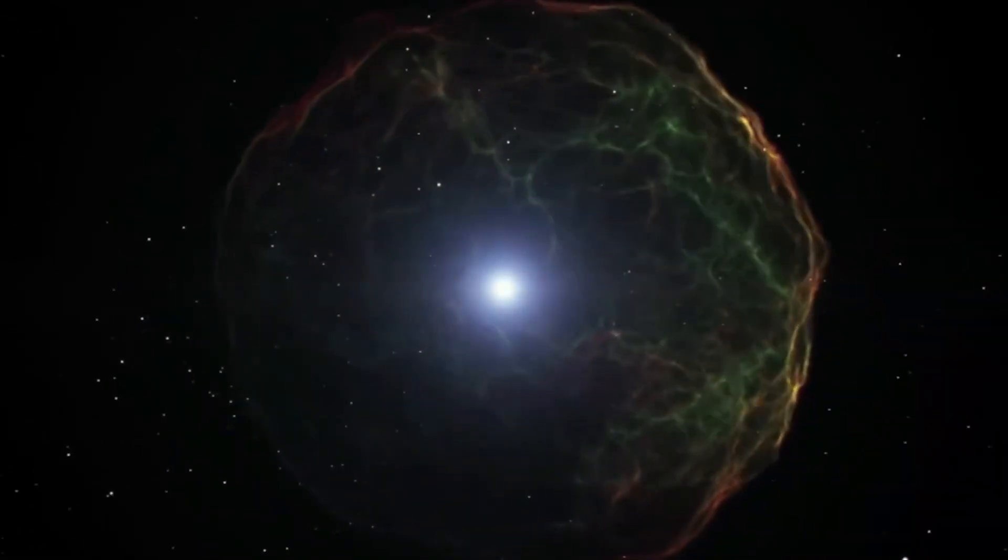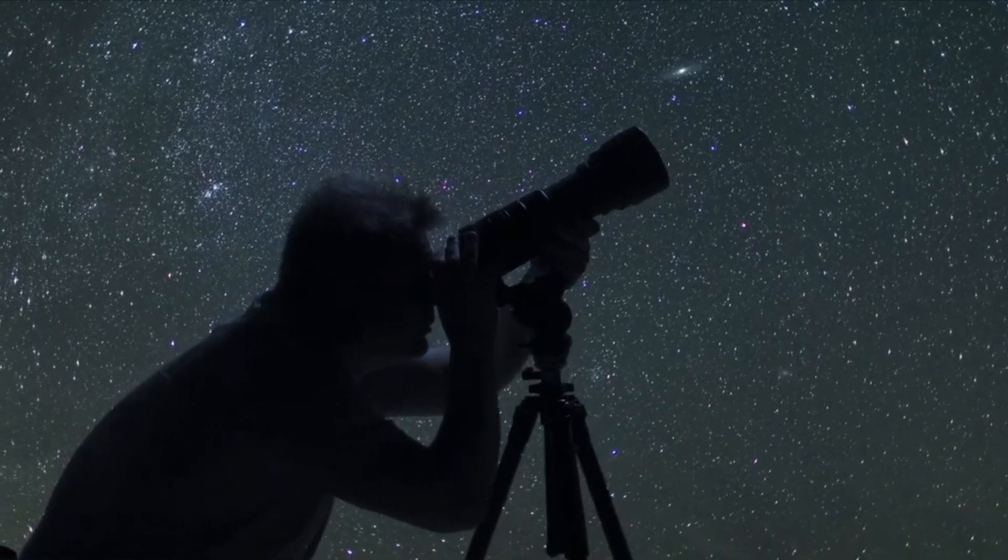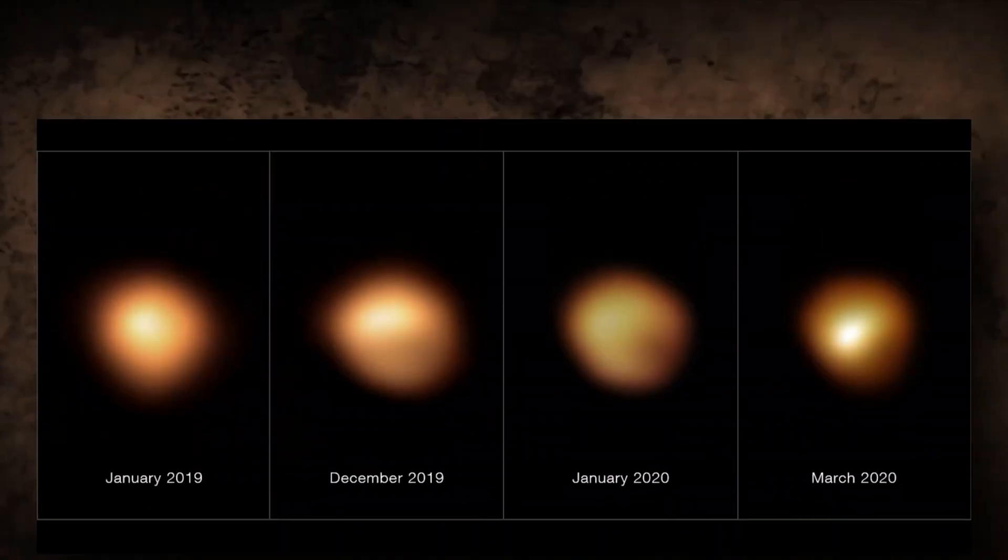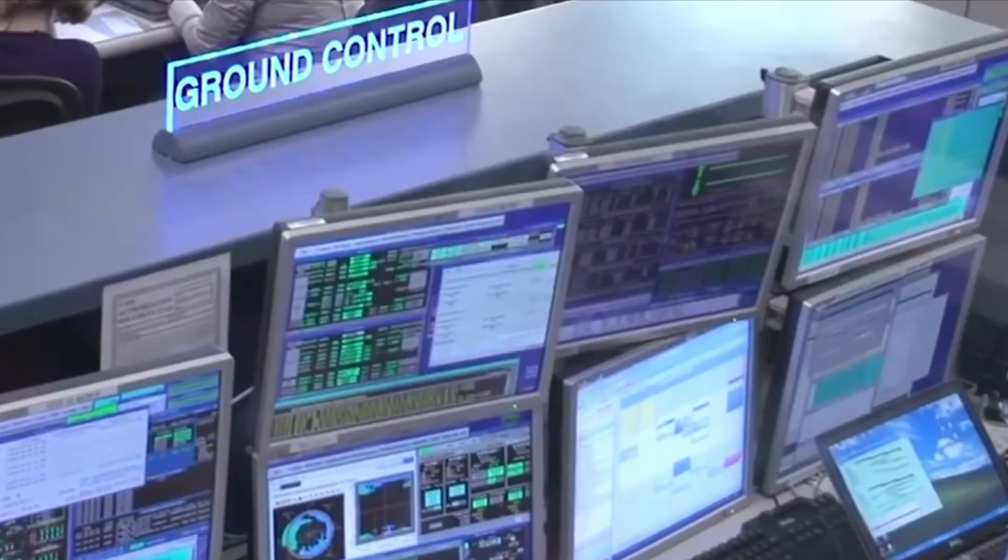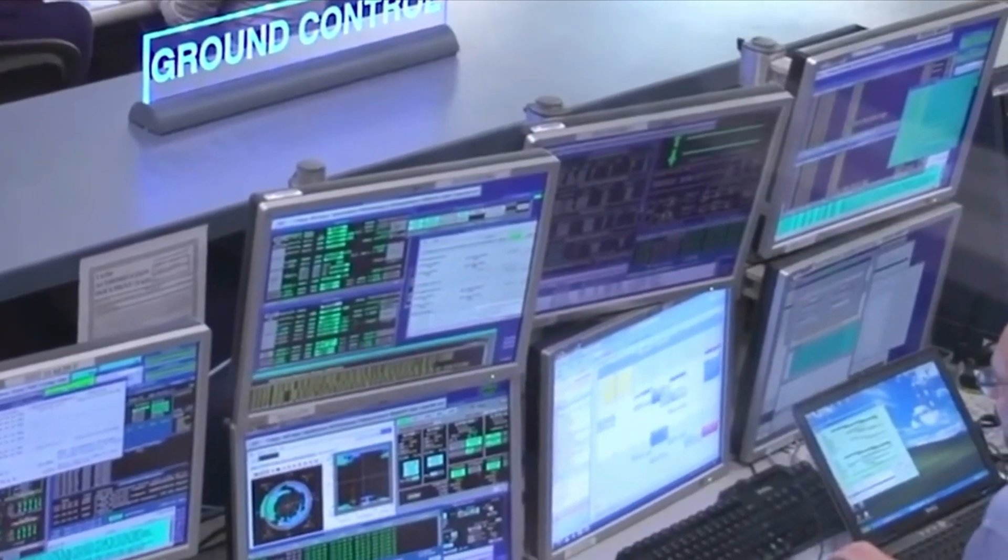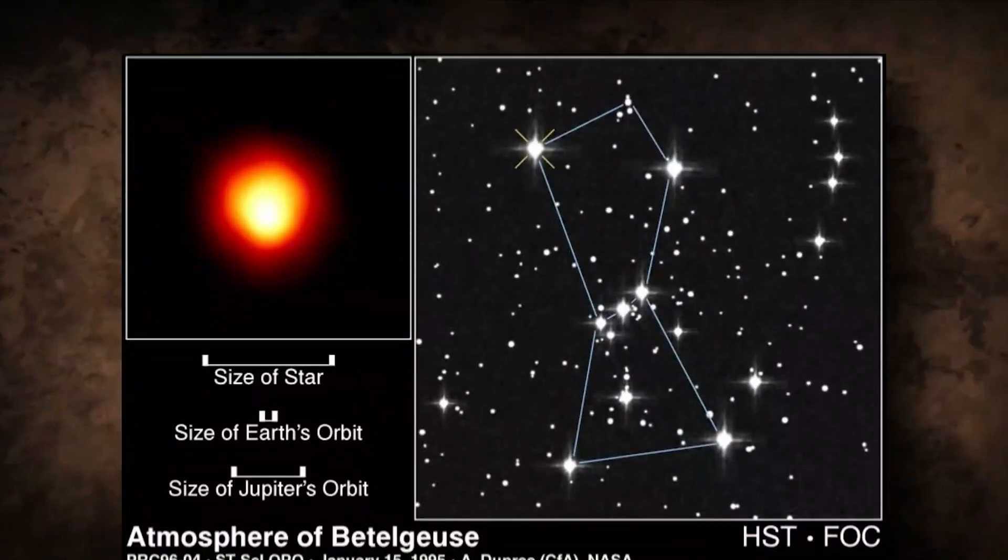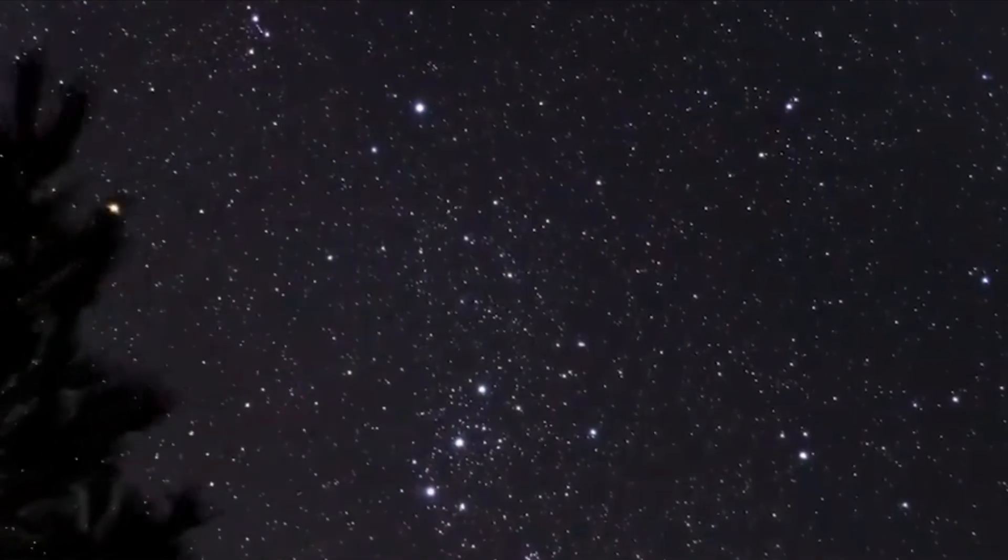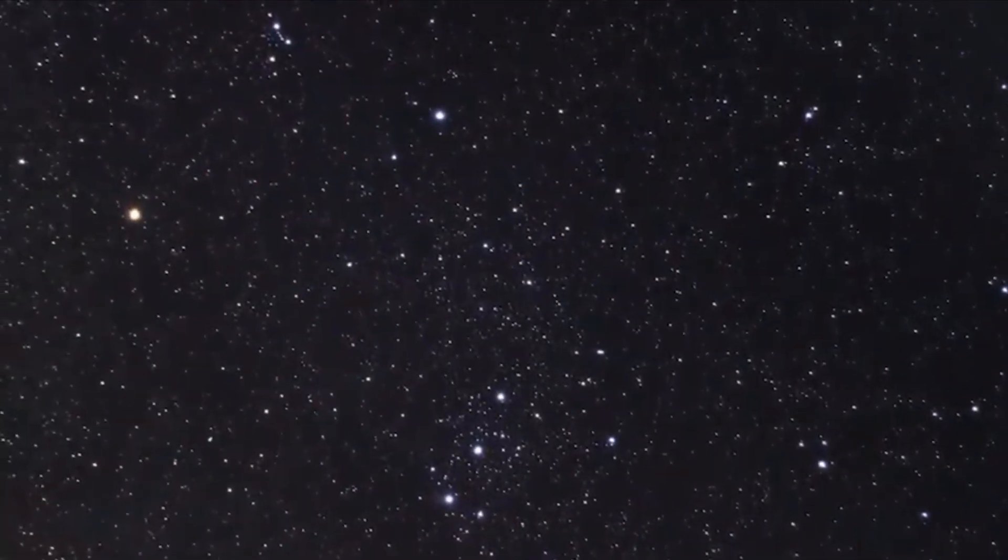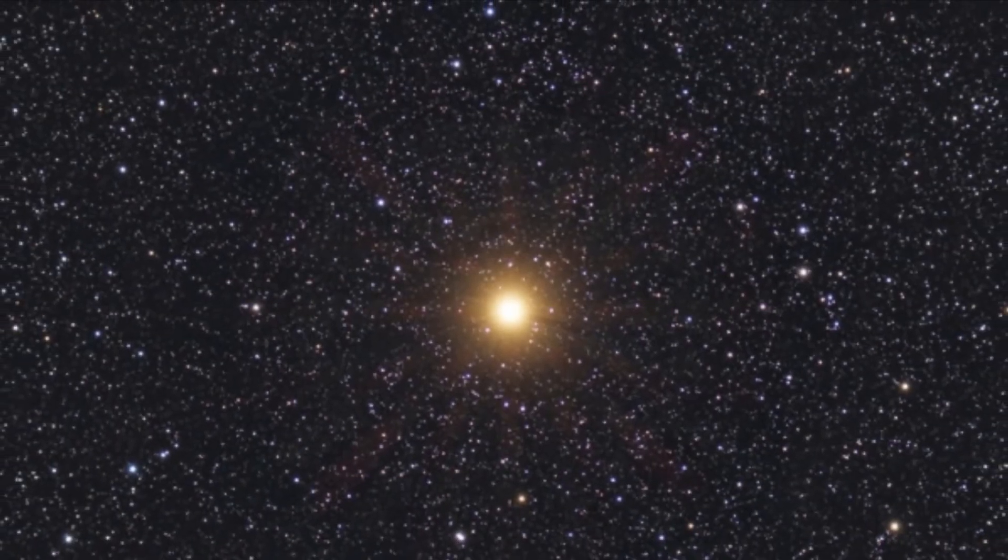Astronomers are worried because Betelgeuse has been getting dimmer. In late 2019 and early 2020, it went through an unusual dimming event and lost a lot of its brightness. Scientists were amazed and had many theories about why this happened. The Hubble Space Telescope confirmed that Betelgeuse ejected a large dust cloud, blocking some of its light. But since February 2020, the star has not dimmed again.